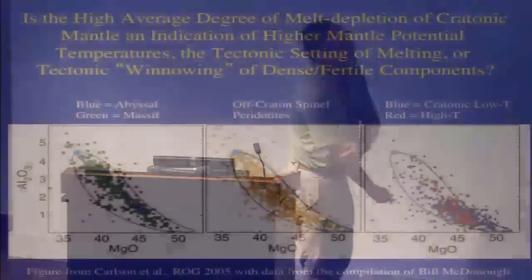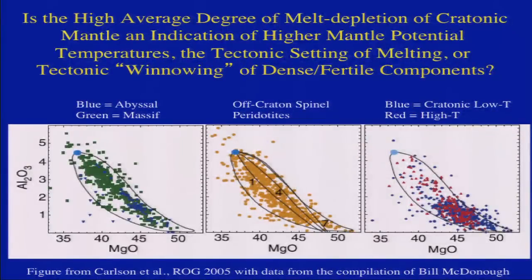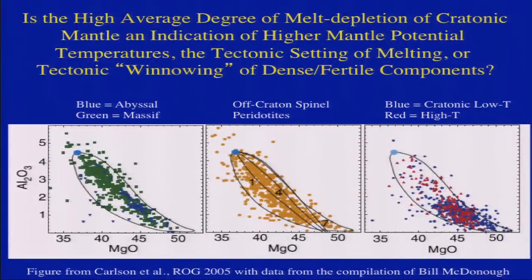Now let's look at conditions where the melting took place. Can we ask whether the high degree of melt removal indicates the mantle was just hotter in the Archean, giving higher degrees of partial melting on average? Does it relate to the tectonic setting? Another way to get high-degree melting is adding water to the mantle — not hot but water-flushed. And there's the option of tectonic winnowing of dense components.